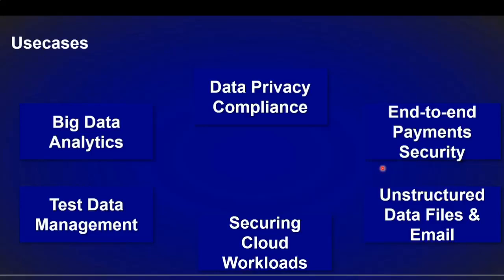To stress an important point: VPNs and SSL only address data in motion, and database encryption addresses data at rest — but what about data in use? A help desk person could take a screenshot or photograph the screen. Format preserving encryption covers all three states: data at rest, data in motion, and data in use.